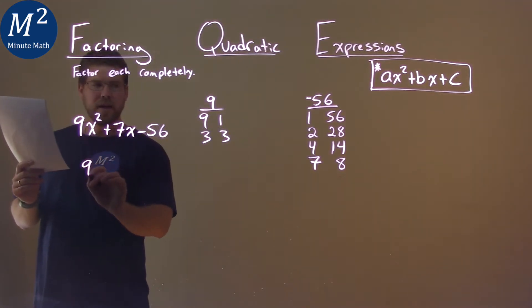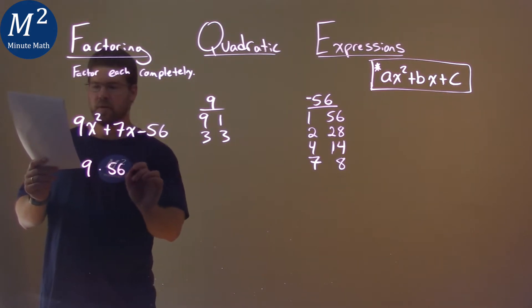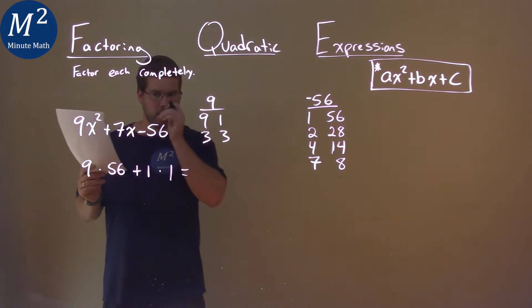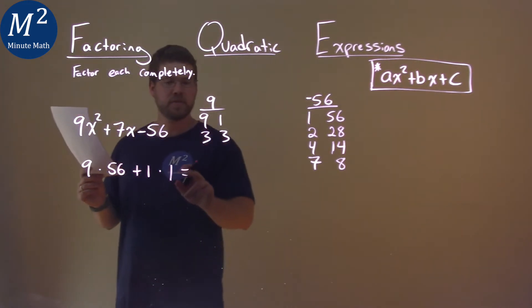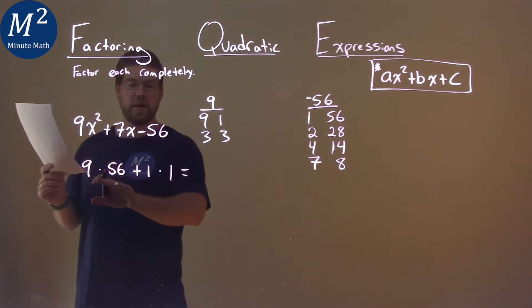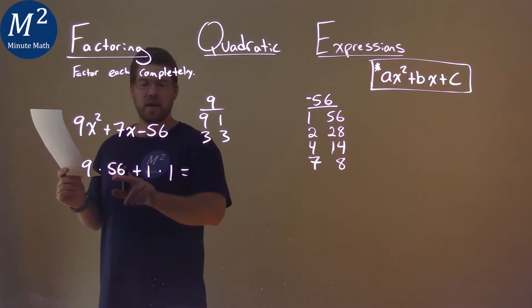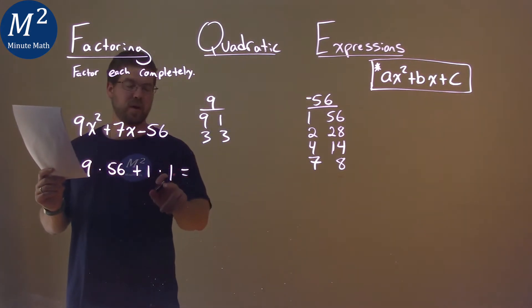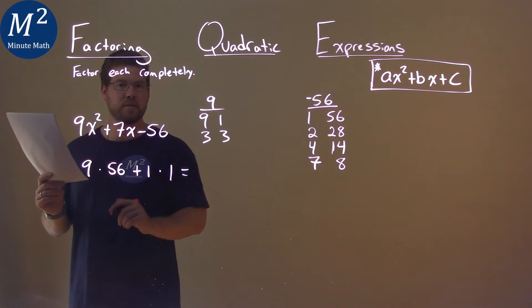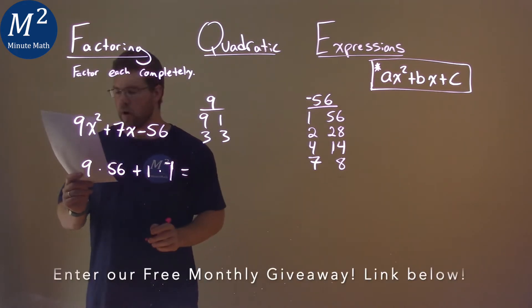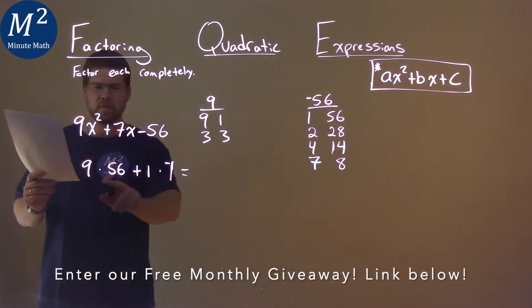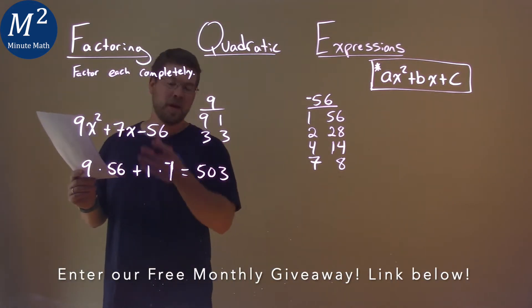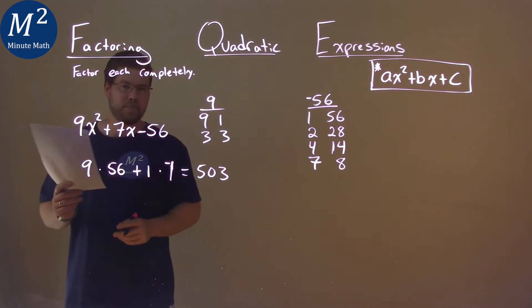So, 9 times 56 plus 1 times 1. We know we have to have the smaller of the two final values be negative. 9 times 56 and 1 times 1, which one is smaller? That's going to be the 1 times 1. It's clearly smaller than 9 times 56. So I'm going to put that negative here on the second one. 9 times 56 plus 1 times negative 1 is a positive 503, and that's clearly not equal to that b value 7.